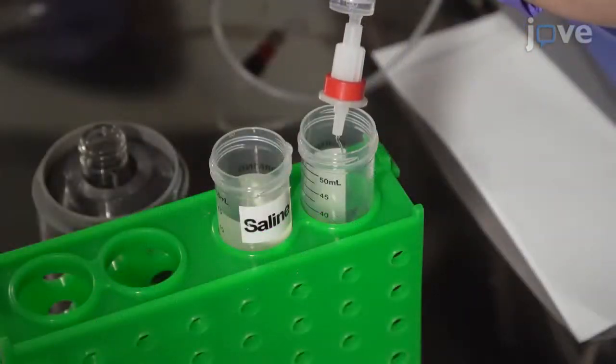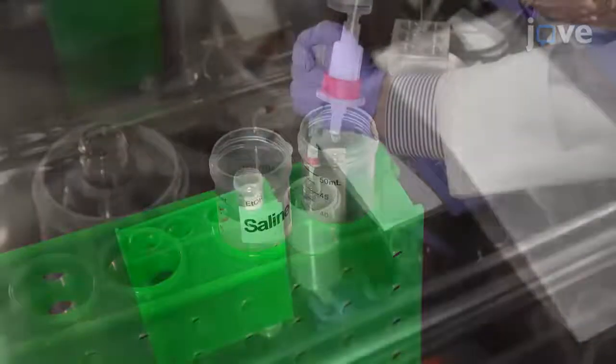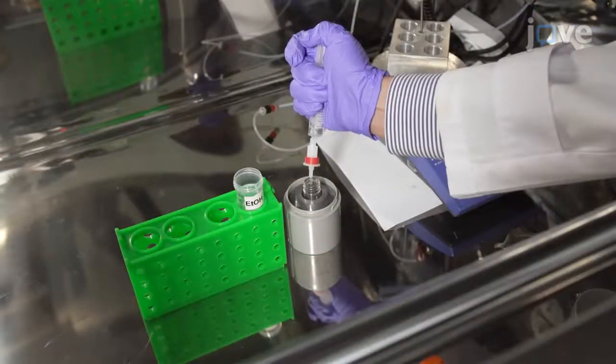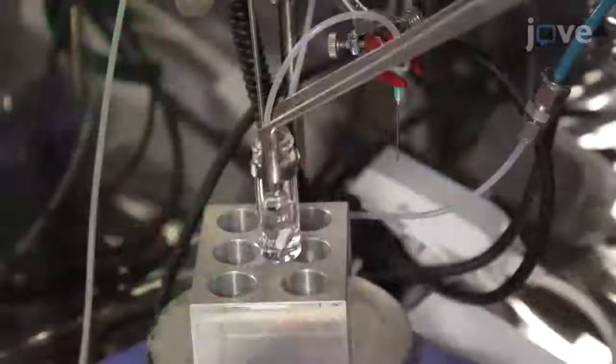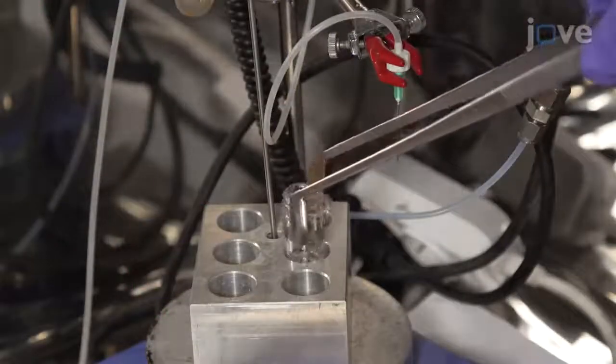Wash the cartridge with 2 milliliters of saline and dilute the radiolabeled peptide with 0.7 milliliters of 95% ethanol. Remove the solvent at 80 degrees Celsius under nitrogen gas.